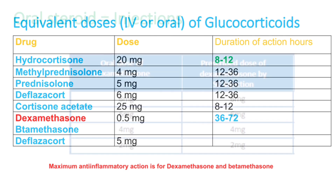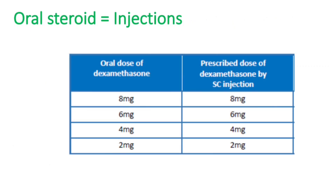Dexamethasone is one of the most powerful anti-inflammatory drugs in this group. We may think that injections are more efficacious than tablets, but in steroids that is wrong — both injections and tablets are equal. For example, if a patient comes with severe asthma, giving oral tablets or injection produces equal results. The only problem is in conditions like sepsis where tablets may not be absorbed. So oral steroids and injectable steroids have equal efficacy, and there is no need for an injection when the patient can take an oral tablet.